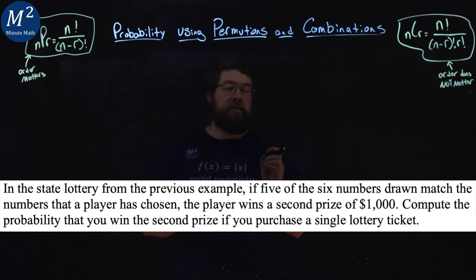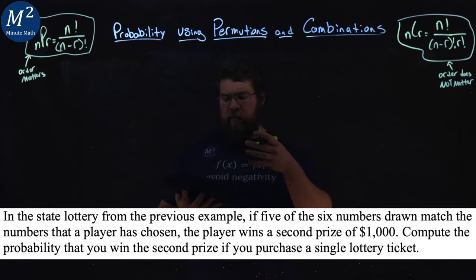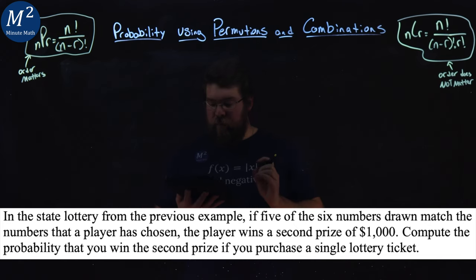In the state lottery from the previous example, we had numbers 1 through 48. If you get all six numbers correct, where order doesn't matter, you won. In this problem though, if five of the six numbers drawn match the numbers that a player has chosen, the player wins a second prize of $1,000. Compute the probability that you win the second prize if you purchase a single lottery ticket.